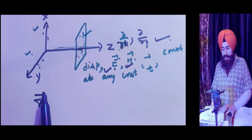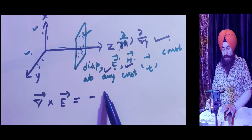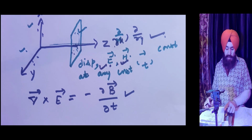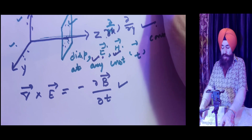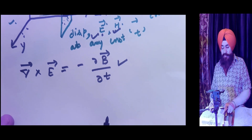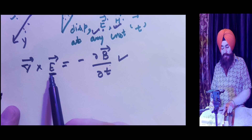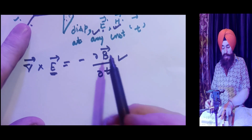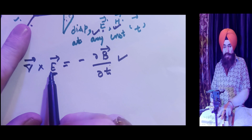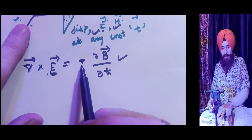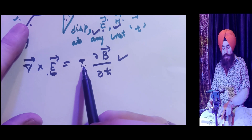You know very well that del cross E equals minus ∂B/∂T. This is Faraday's law of electromagnetic induction, and also a Maxwell equation. When the magnetic field changes with time, an induced EMF is produced. The negative sign means opposition — Lenz's rule — meaning the induced EMF opposes the cause which produces it.